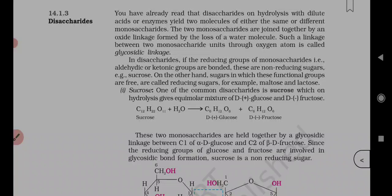We have discussed two examples: sucrose and maltose, which gives two similar molecules of glucose. The two monosaccharides are joined together by an oxide linkage formed by the loss of a water molecule. Such a linkage between two monosaccharide units through an oxygen atom is called glycosidic linkage.